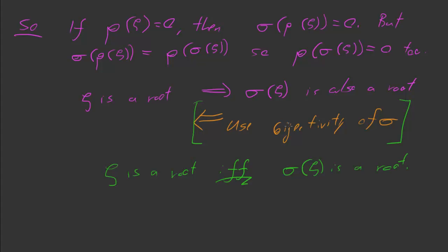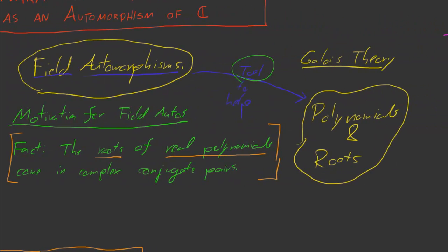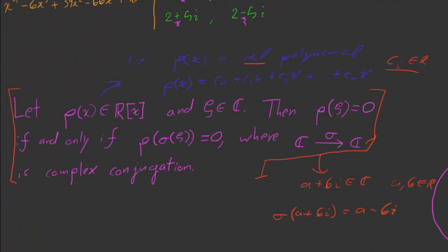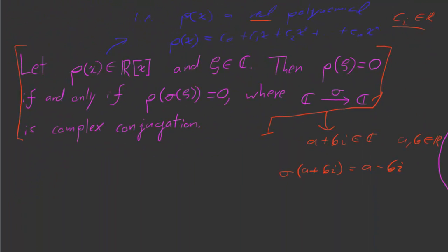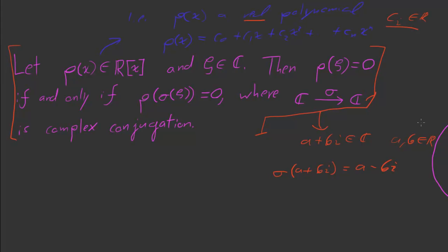That concludes the motivation. We started with a question about real polynomials — the claim that if you've got a real polynomial and a complex number ζ, then ζ is a root if and only if its conjugate is a root. We had this claim about polynomials and we used field automorphisms to give a nice explanation of why it's true.